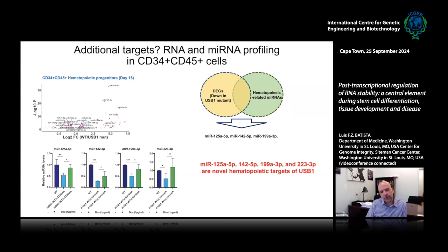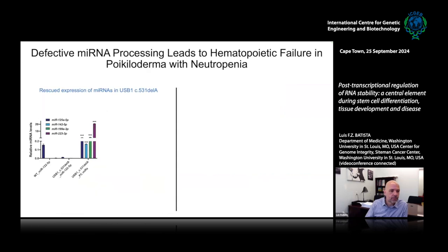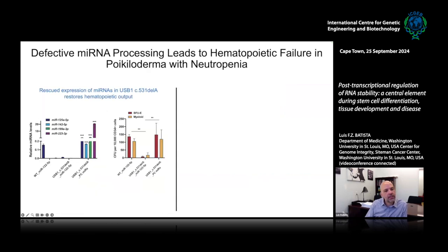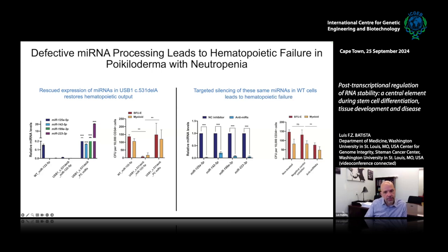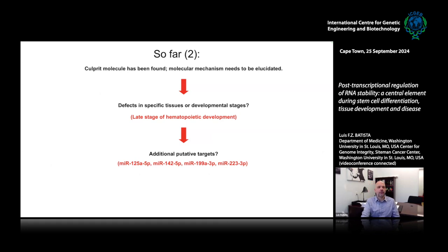Were these microRNAs causing disease? We overexpressed these four microRNAs in our mutant cells and it was pretty clear that the mutants went from very low erythroid and myeloid output to a complete rescue. Then we tried the opposite: we inhibited these four microRNAs using antagomirs in wild type cells and saw the opposite phenotype — significant reduction of hematopoiesis in wild type cells. So it seems we have found the molecular cause of poikiloderma with neutropenia, which is reduced levels of these specific microRNAs.